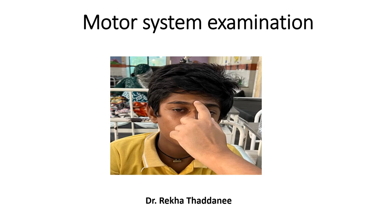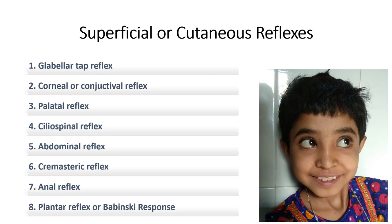Hello everyone, this is my 11th video on the motor system examination. In the first 10 videos, I have already explained how to assess the bulk, posture, tone, power, and the deep tendon reflex. Today I am going to tell you the details of superficial or cutaneous reflexes. There is a long list of reflexes under this category, and I have arranged all these reflexes in a head-to-toe manner to remember them easily.